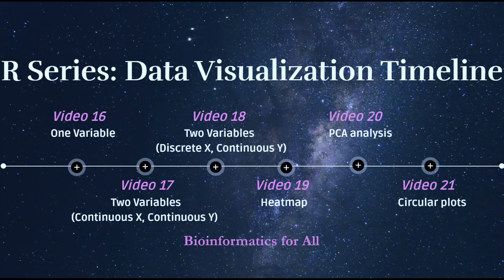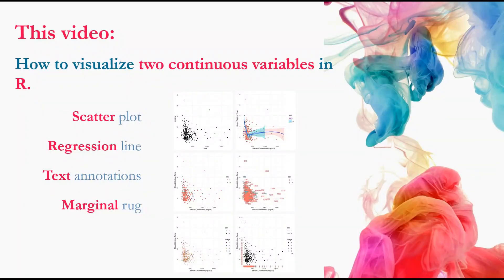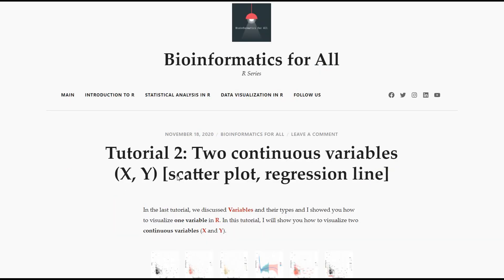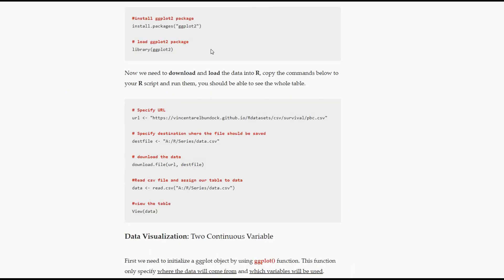Hello everyone, welcome to our series. In this video I will show you how to visualize two continuous variables in R. I'll show you how to make a scatter plot, regression line, text annotation, and a marginal rug. You will also find the documentation of this video on my R blog with all the examples and codes — I will put the link below.